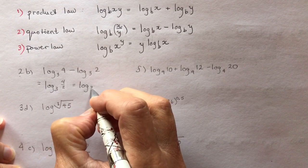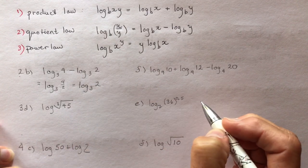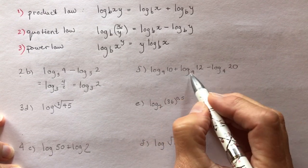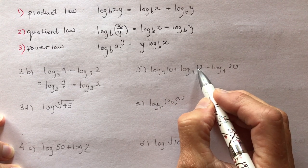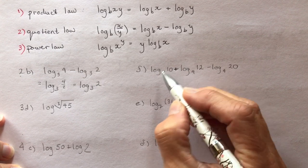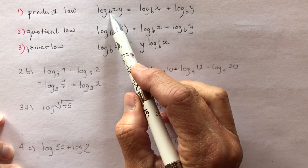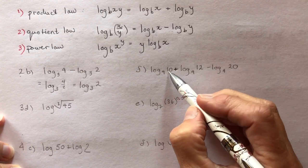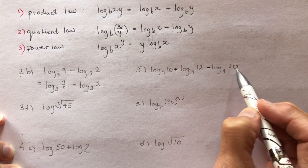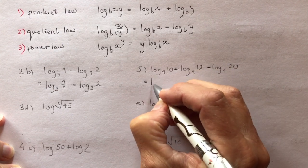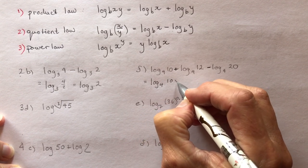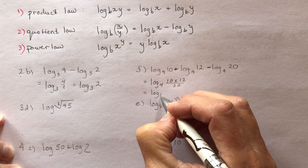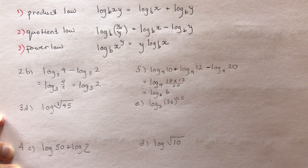So this is log base 3 of 4 over 2, which is log base 3 of 2. Next: log base 4 of 10. Notice they all have the same base of 4. These two have a plus sign, so I multiply them together, and the minus means I divide by 20. That gives log base 4 of 10 times 12 divided by 20, which is log base 4 of 6.